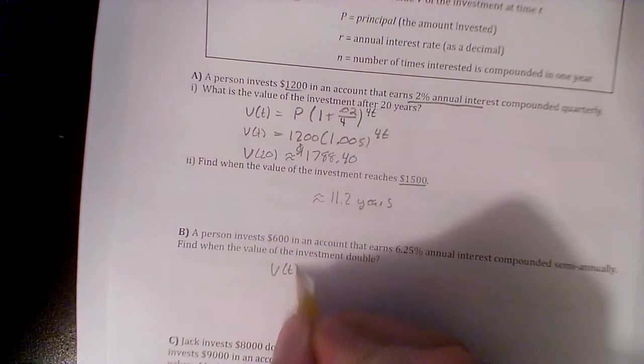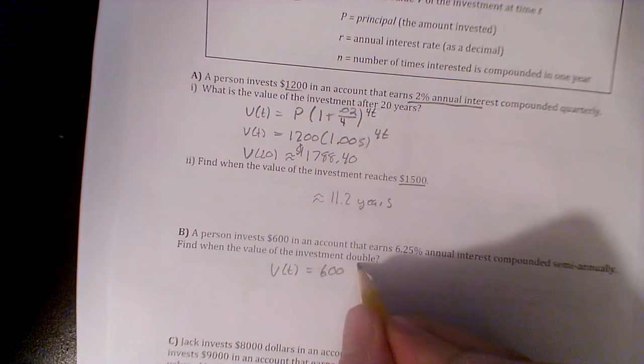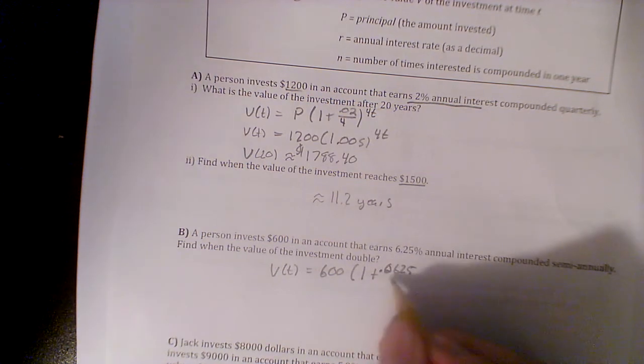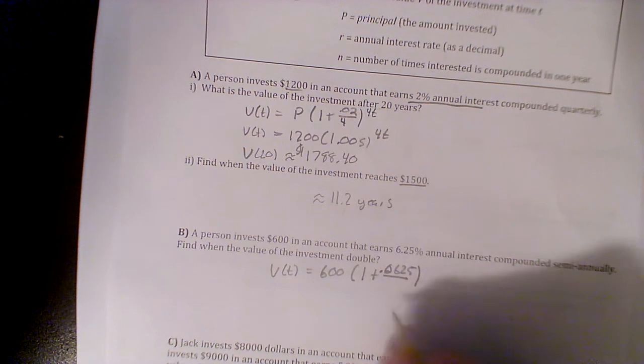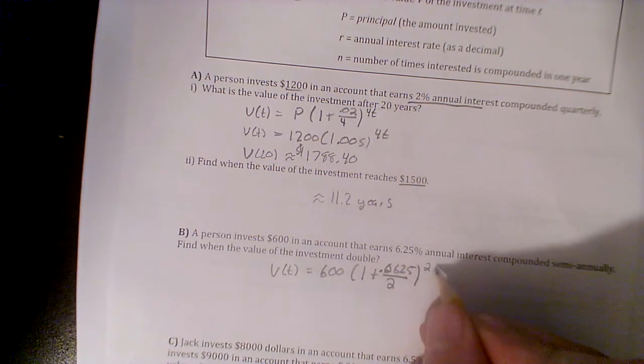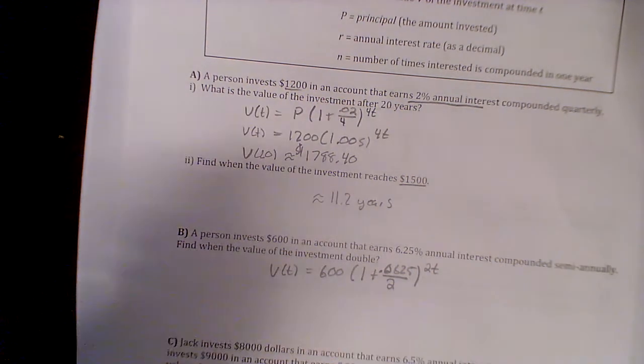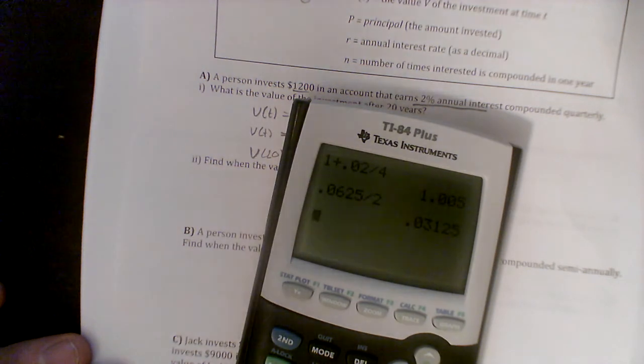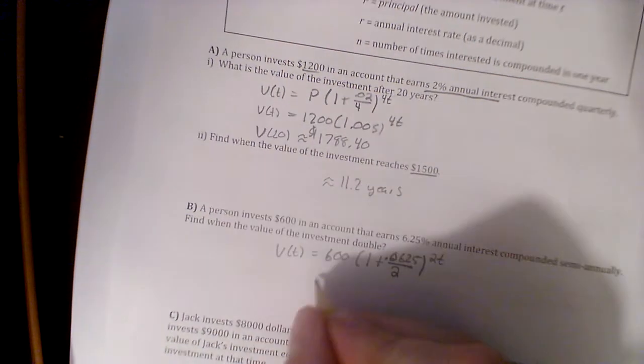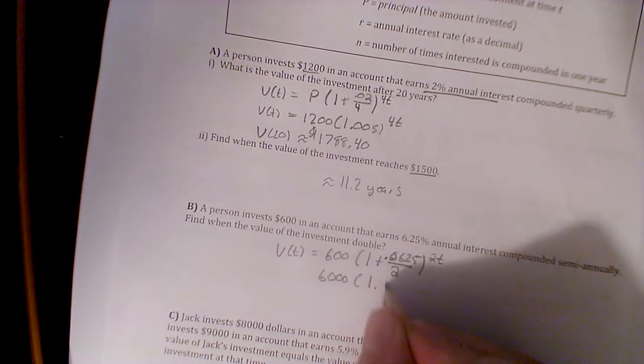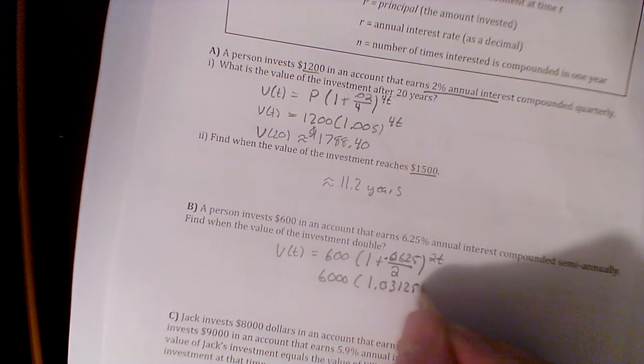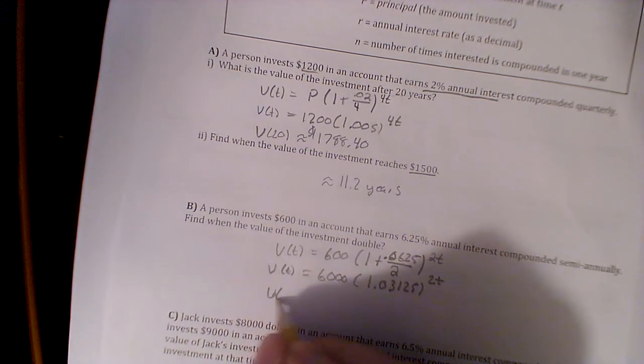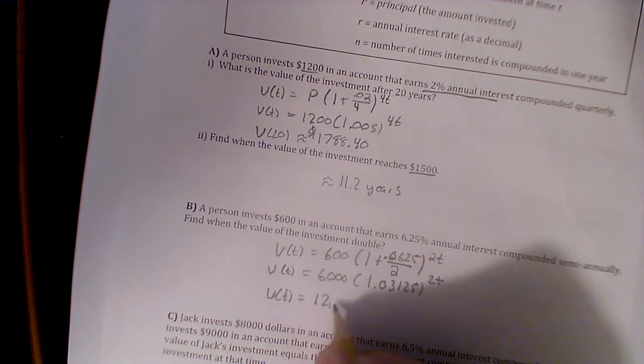Let's hit this next one. We've got a person that invests... That's the first part, $600 and earns, so 1 plus 0.065, compounded semi-annually, so twice a year, and 2t. So we'll go ahead and do that math. 0.065 divided by 2 is 0.03125. So let's write it again: V(t) equals 600 times 1.03125 to the 2t. There's the equation I'm gonna use.